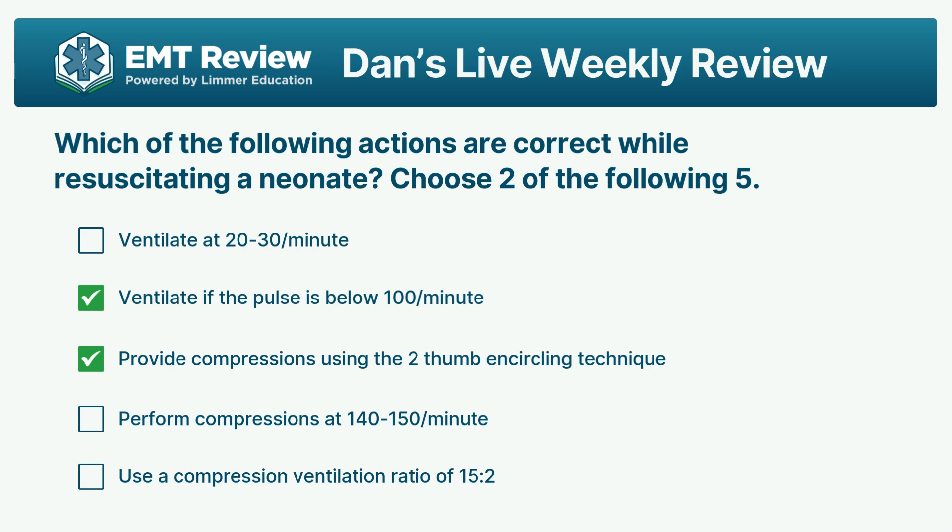We use a compression-to-ventilation ratio of 3 to 1 in a neonate. Why? Because we think oxygenation is going to have a big effect — that ventilation matters critically. We know that hypoxia can put a neonate into bradycardia very quickly, and that oxygen is going to be needed to recover. So the compression-to-ventilation ratio is 3 to 1.